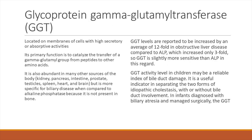Coming to the next enzyme — gamma-glutamyl transferase or transpeptidase, which is GGTP. It is located on the membrane of cells with high secretory and absorptive activities. Its function is basically to transfer the gamma-glutamyl group to peptides or to another amino acid. It is abundant in different other sources apart from the biliary tract, like kidneys, pancreas, intestine, prostate, testicles, spleen, heart, and brain. But it is mostly specific for biliary disease when compared to alkaline phosphatase. GGTP levels are reported to be increased by an average of 12-fold in obstructive liver diseases, compared to ALP which increases only 3 to 4 times. So GGTP is slightly more sensitive than ALP in this regard.